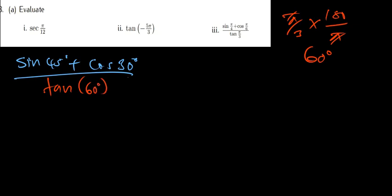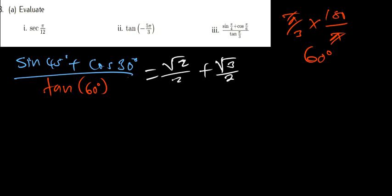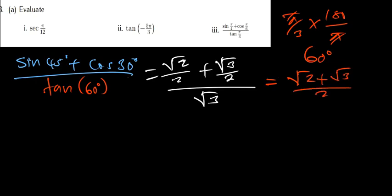Now substituting special angle values: sin(45°) = √2/2, cos(30°) = √3/2, and tan(60°) = √3. Since the denominators of sin(45°) and cos(30°) are both 2, I can add those numerators: (√2 + √3)/2. Then I divide this by √3, which is the same as multiplying by 1/√3.